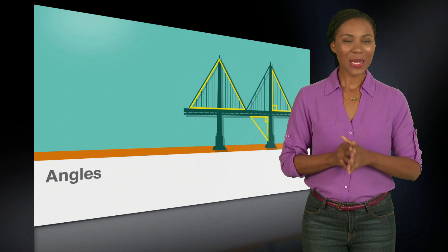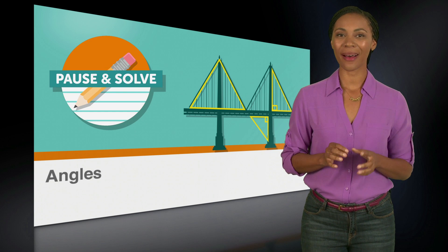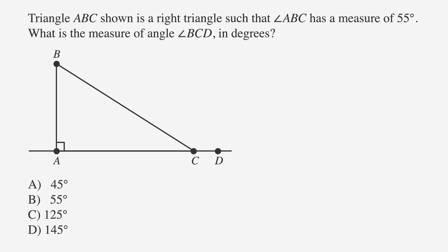Okay, we've got one more practice question in this lesson, but this time we're going to make it a pause and solve. Here's the question. Triangle ABC shown is a right triangle such that angle ABC has a measure of 55 degrees. What is the measure of angle BCD in degrees? The answer choices are A, 45 degrees, B, 55 degrees, C, 125 degrees, and D, 145 degrees. Now it's your turn. Ready, set, pause.